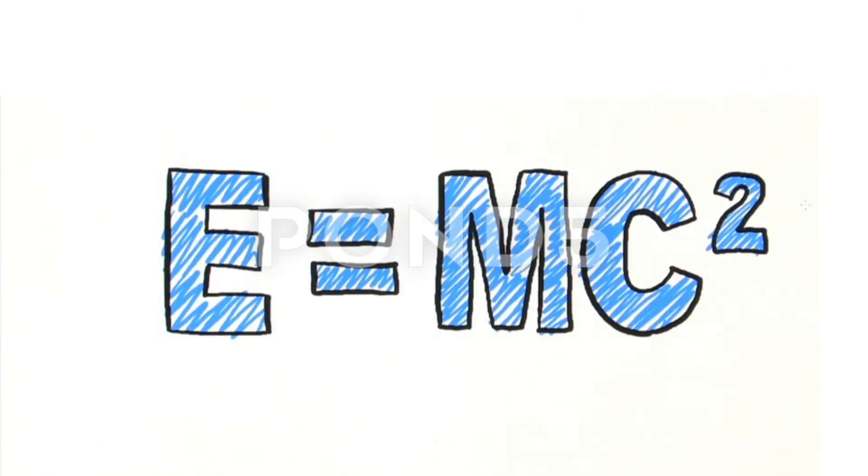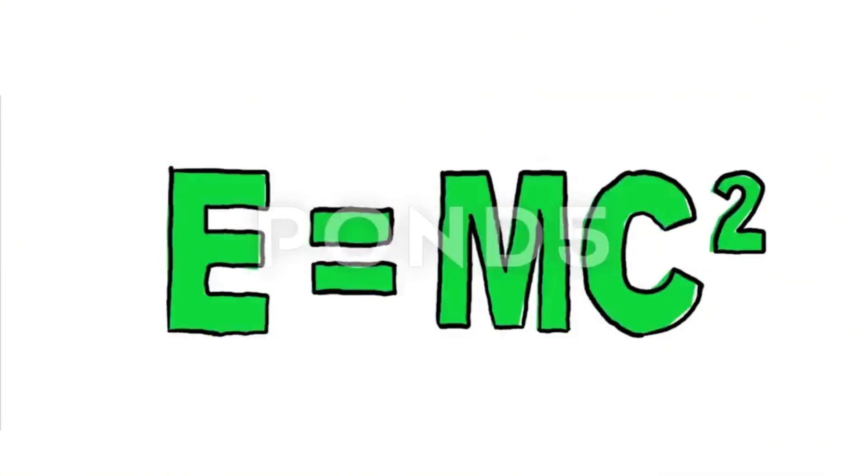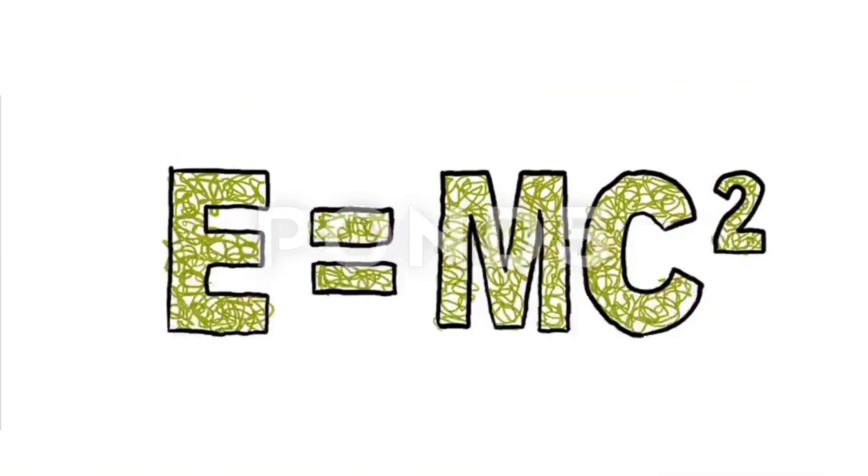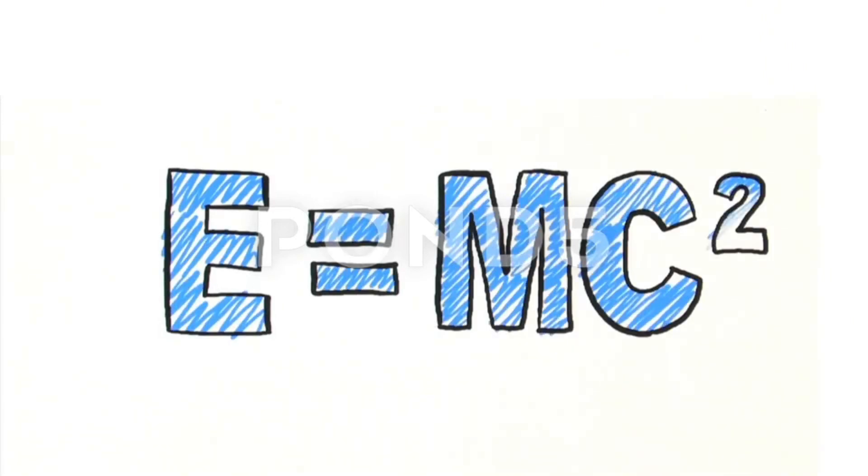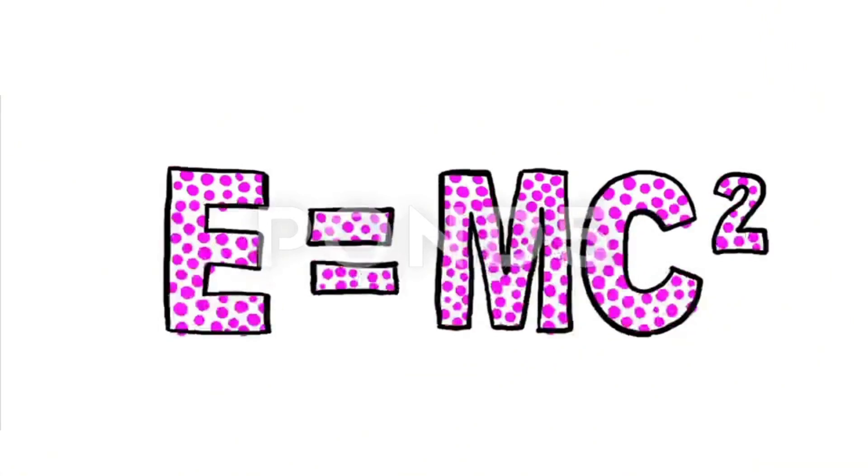The mass of a black hole is not actually in the form of traditional mass. Any massive particles that enter a black hole are ripped apart by the intense tidal forces and turned back into energy, like in Einstein's equation, E equals mc squared. Mass is just another form of energy. So what form is this energy in now?